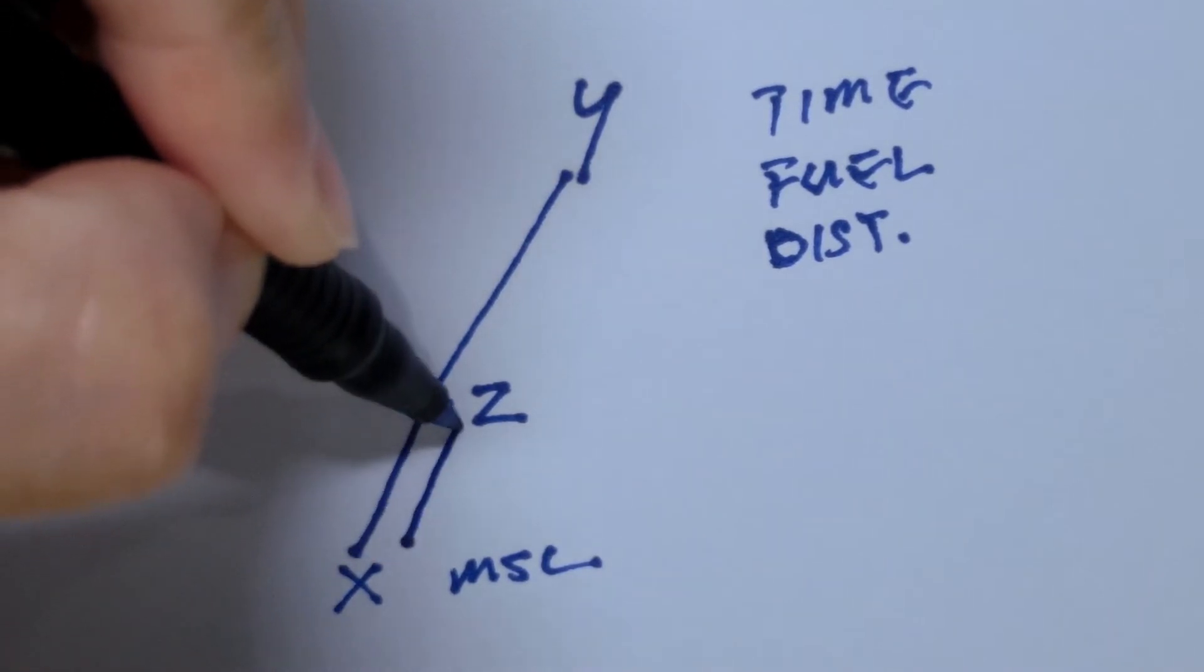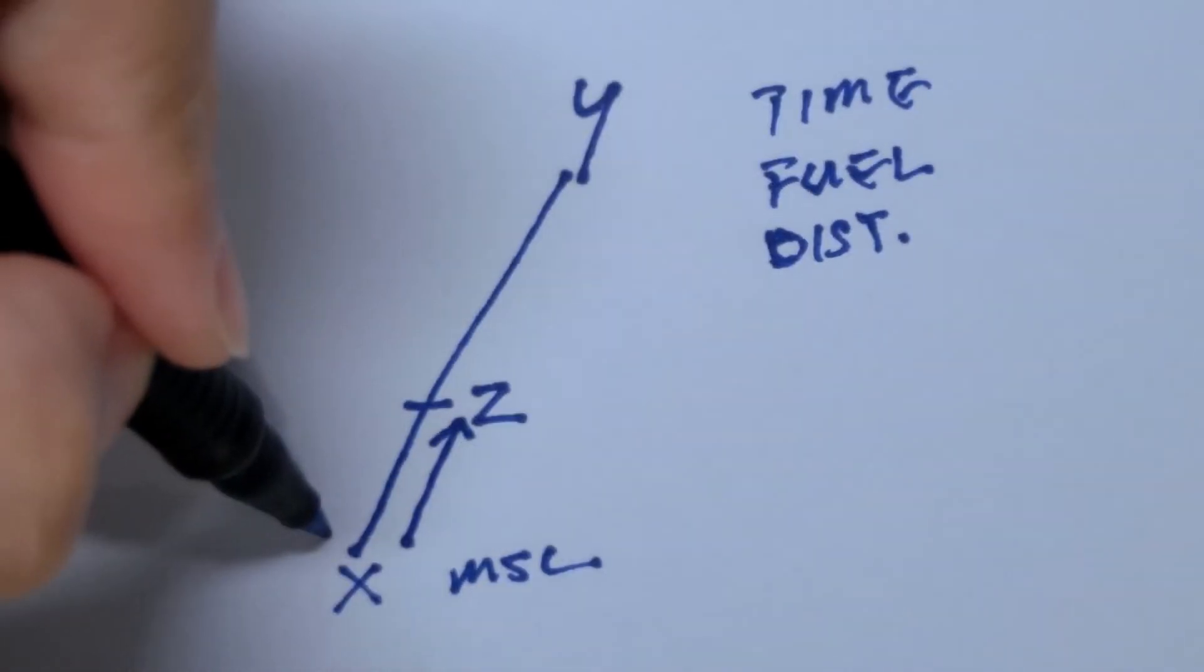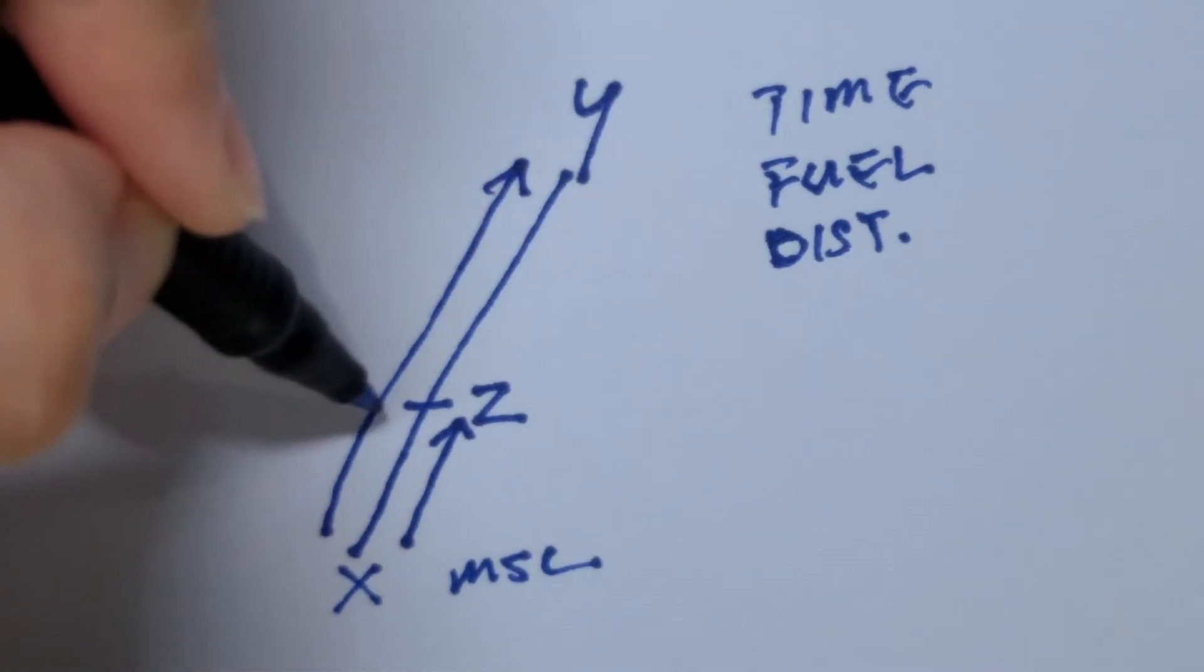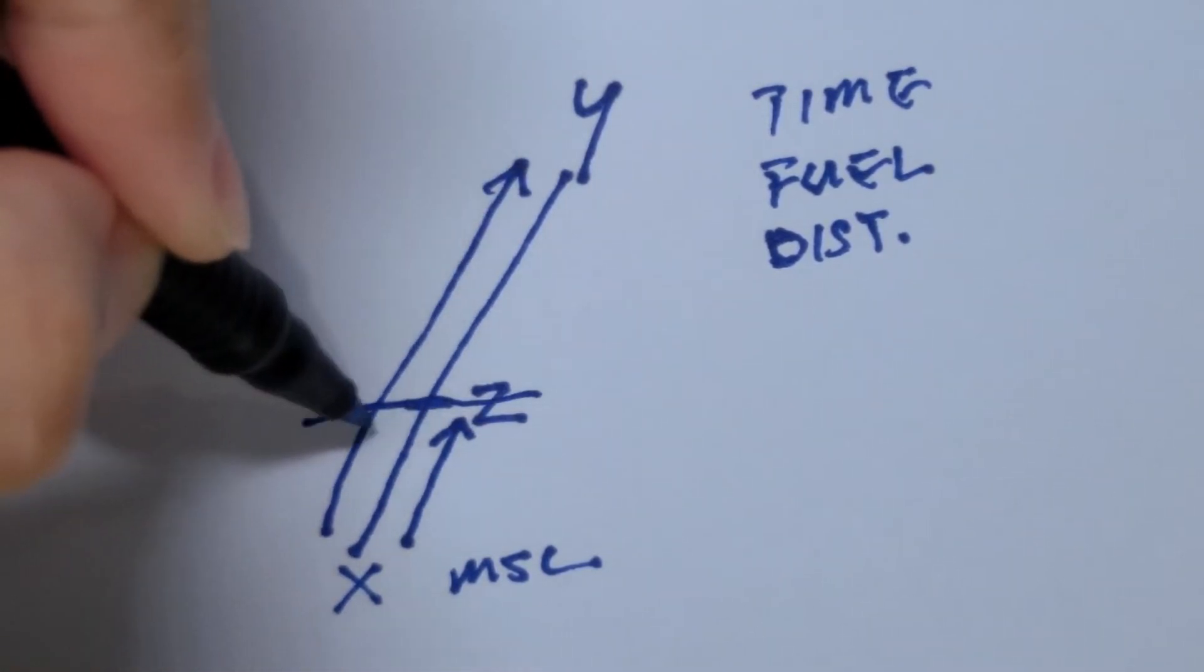So an aircraft that wants to stop here versus one that wants to continue all the way, well, this first part of the journey would be the same.